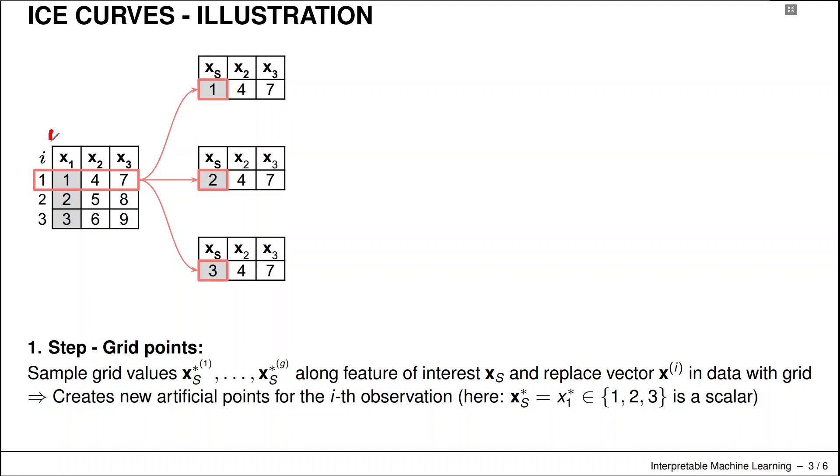We use a grid here—we just took some regular values from 1 to 3. These are the grid points for which we want to plot the function.